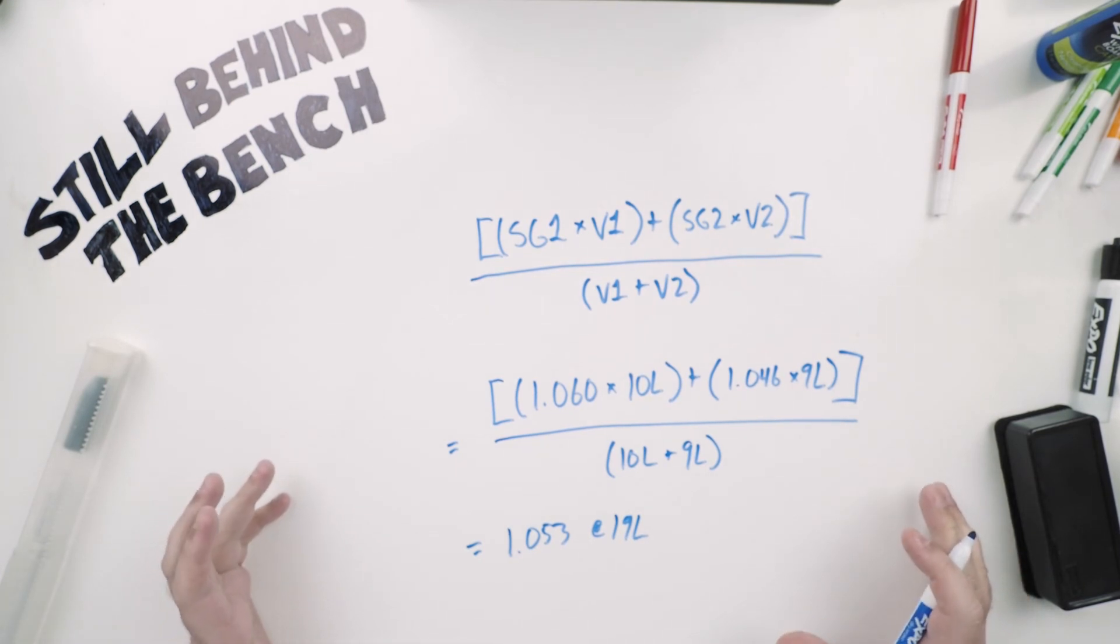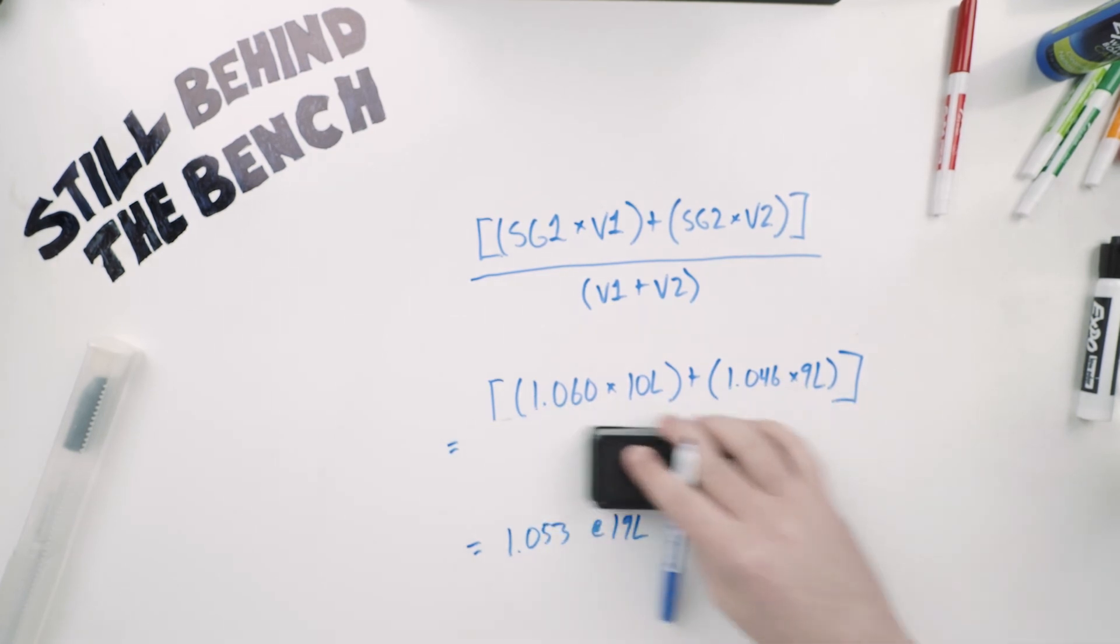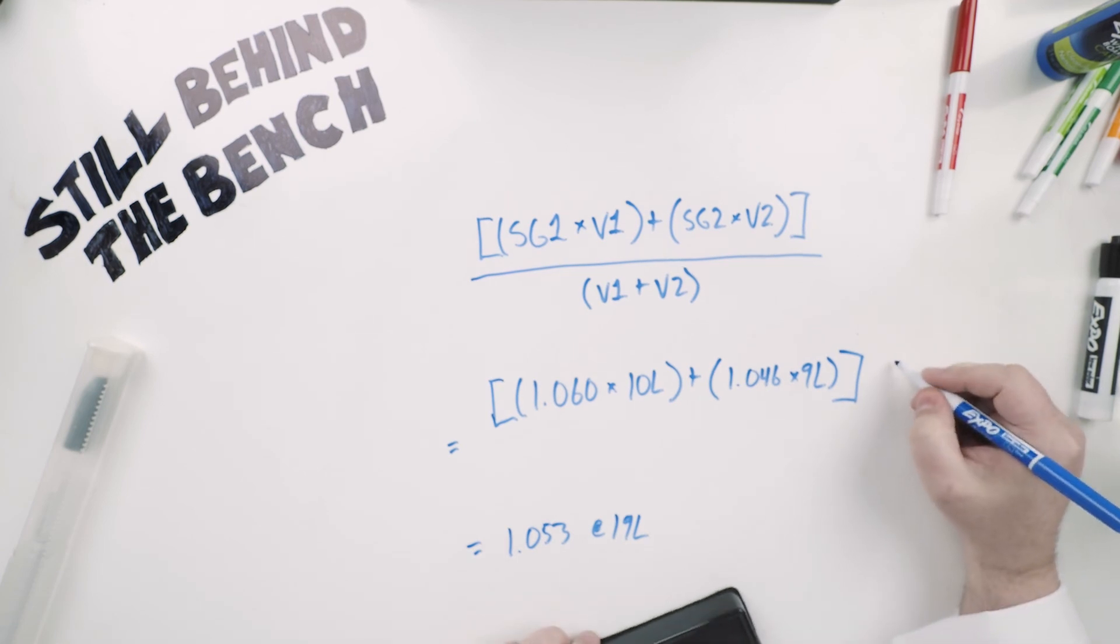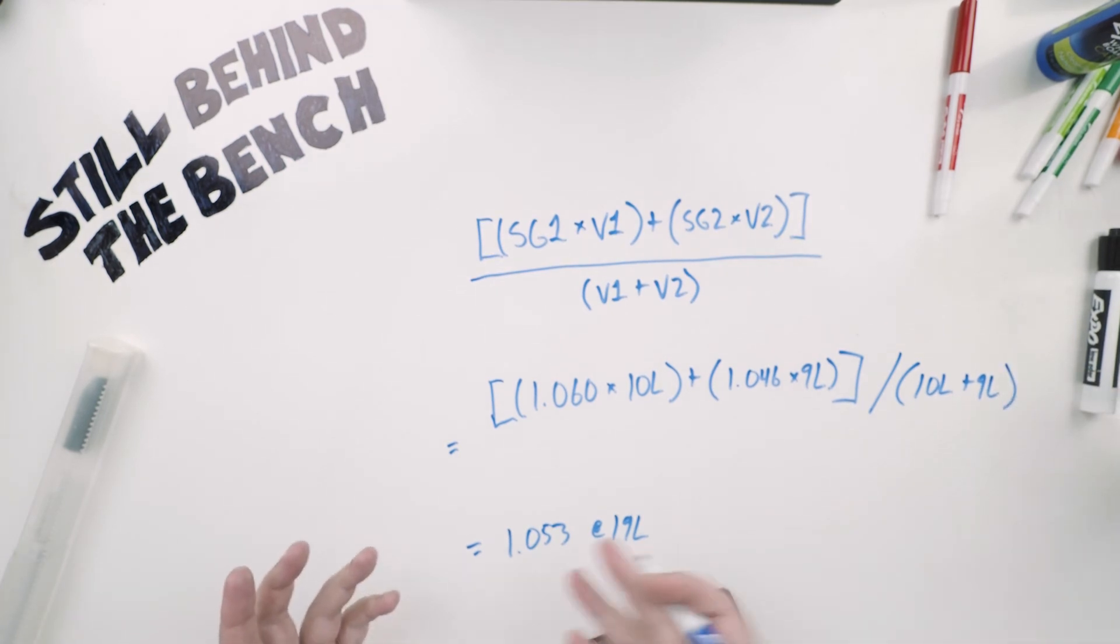Now if you have trouble doing math like this you can go over to Wolfram Alpha and type this in. You'll want to do divided by 10 liters plus 9 liters, write it in like that. Let's go on to the dilution portion.